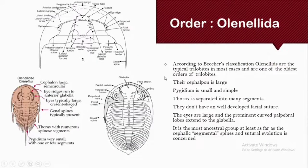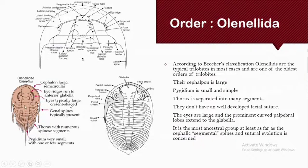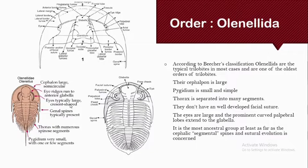According to Beecher's classification, Olenellida are typical trilobites in most cases found in fossil evidence and are one of the oldest groups of trilobites. Their cephalon is typically large, the pygidium is small, the thorax is separated into many segments, and they don't have any well-developed facial suture. The eyes and the prominent curved parabola ridges extend to the glabella, and it is the most ancestral group, at least as far as cephalic segments, spines, and suture evolution are concerned.